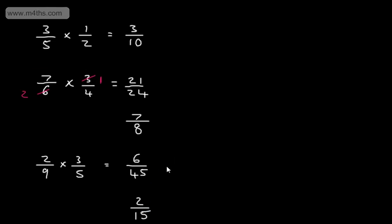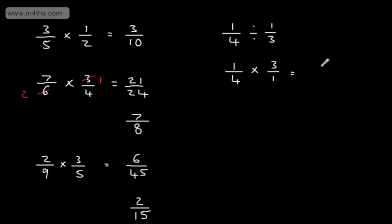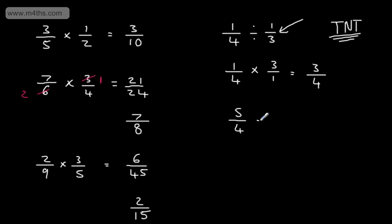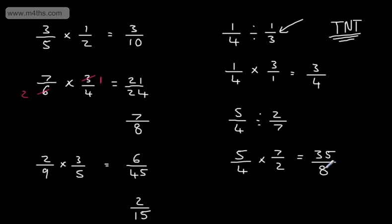Let's look at dividing. If we divide two fractions — let's say we've got 1 quarter divided by 1 third — what we do is turn the second fraction around and multiply. This is the same as writing 1 over 4 multiplied by 3 over 1. Then all we do is exactly the same as before: 1 times 3 is 3, 4 times 1 is 4, giving 3 over 4. I like to use 'turn and times' — turn the second fraction upside down and multiply. So 5 over 4 divided by 2 over 7 is the same as 5 over 4 multiplied by 7 over 2. 5 times 7 gives 35, 4 times 2 is 8, giving 35 over 8, and we can't simplify that fraction any further.